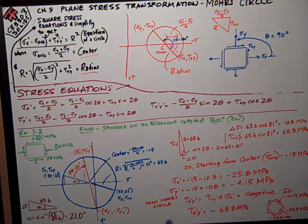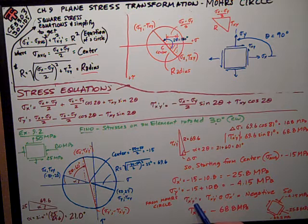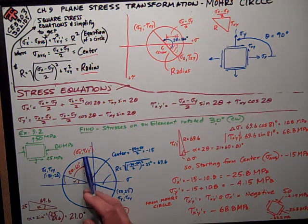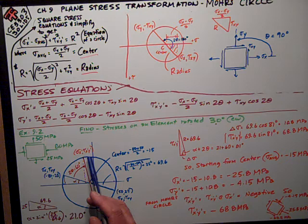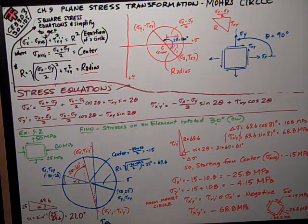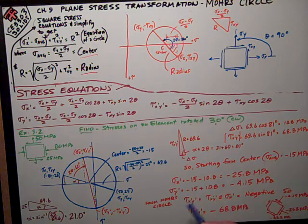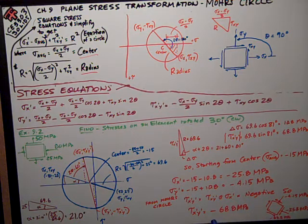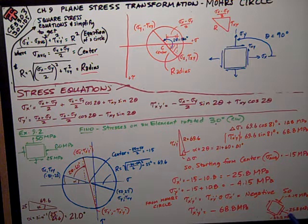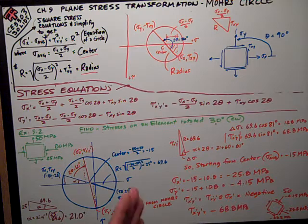For Mohr's Circle, tau x prime y prime is negative or positive, whatever I get plotted with sigma x prime. So that's going to be up here, so that's negative because positive is down. It's that dimension, 68.8, and I've got to put a negative sign in front of it because of that relationship there. It's wherever it plots with sigma x prime. So it works out to be negative 68.8 megapascals. Plot that on a stress element like that. Same exact answer as with the stress equation. So the nice thing about it is you can check your answers, one method with the other.